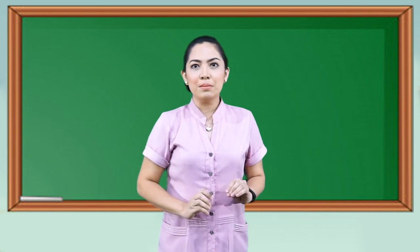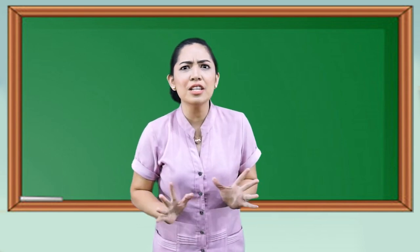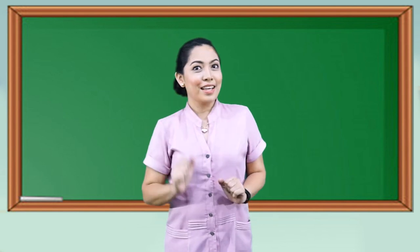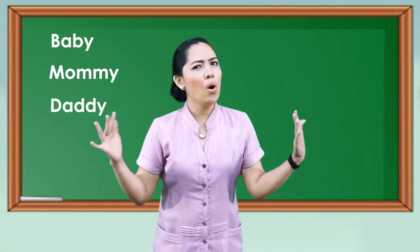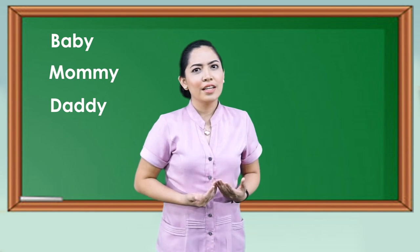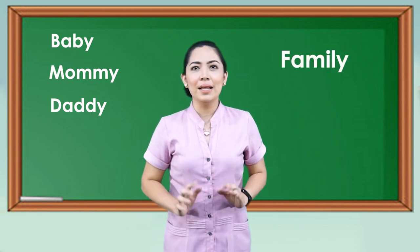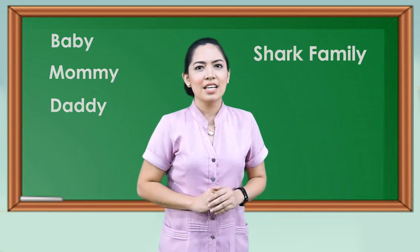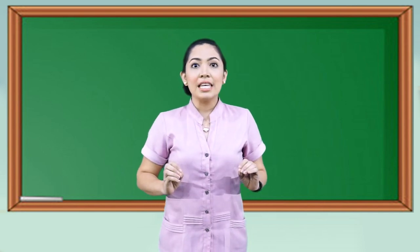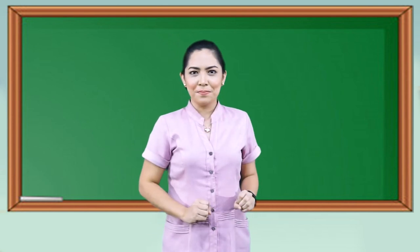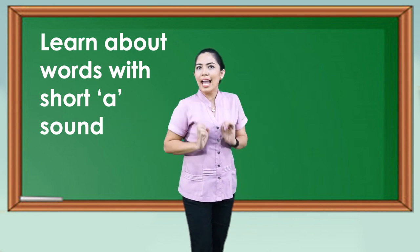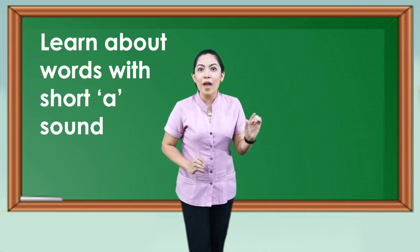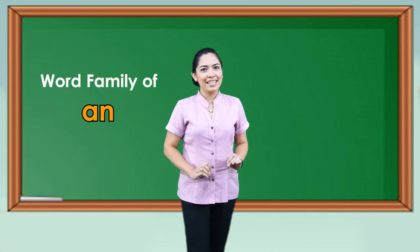So, what are the names of the sharks mentioned in the song? Yes — baby, mommy, daddy. How do we call them all together? Yes, they are family. They are the shark family. Just like the shark family, words can also have their own family. Today, we are going to learn about words with the short A sound, or to be specific, the word family of '-an'. Are you ready?